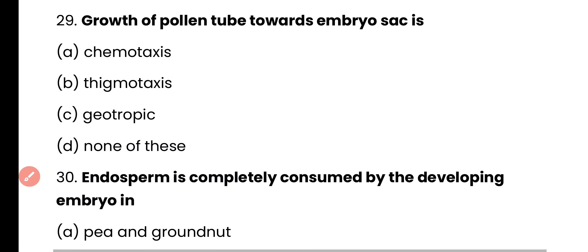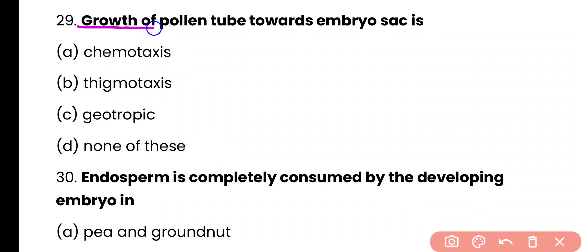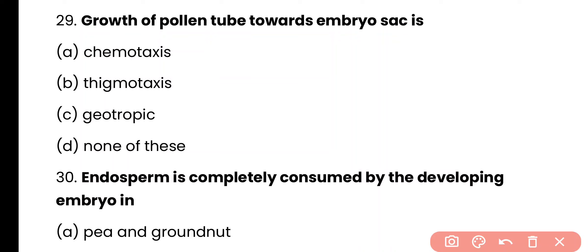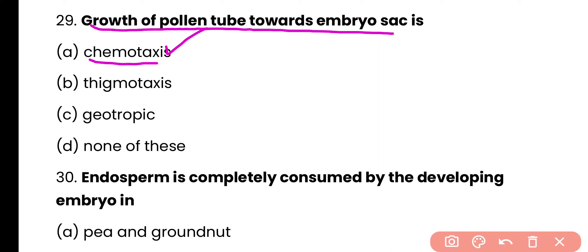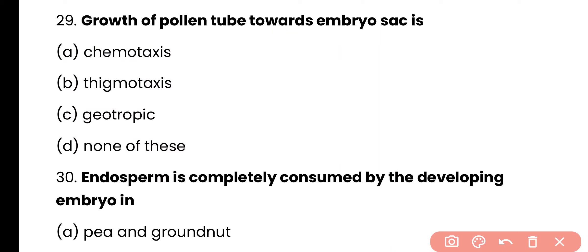Question 29. Growth of the pollen tube towards the embryo sac is: chemotaxis, thigmotaxis, geotropic, or none of these? The correct answer is option A. Growth of the pollen tube towards the embryo sac is a type of chemotaxis movement, because it is under the influence of calcium ions and some other carbohydrate-like chemicals.